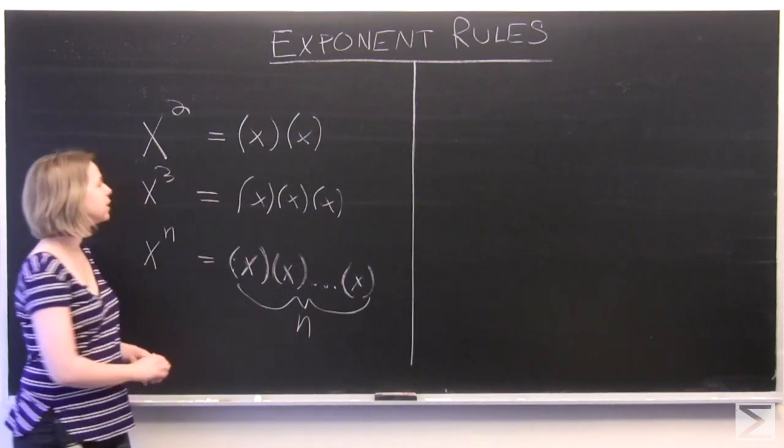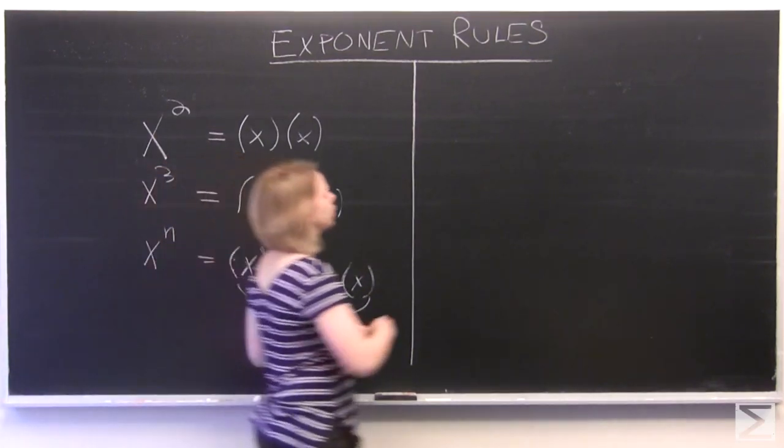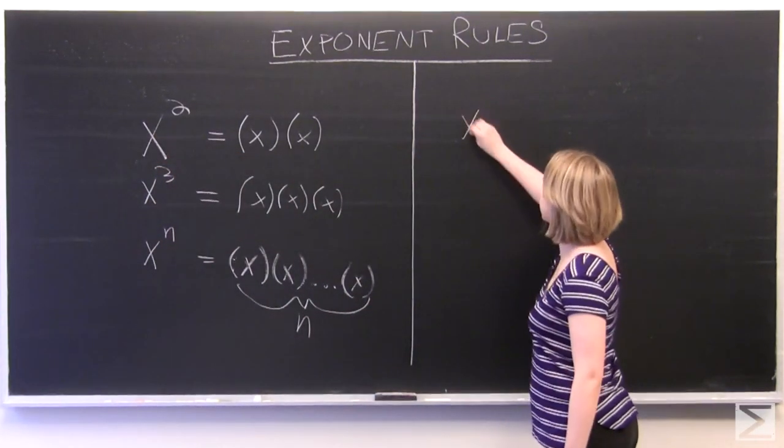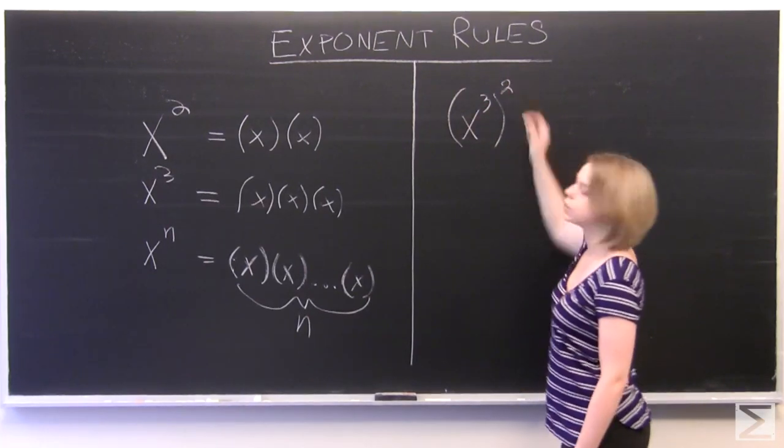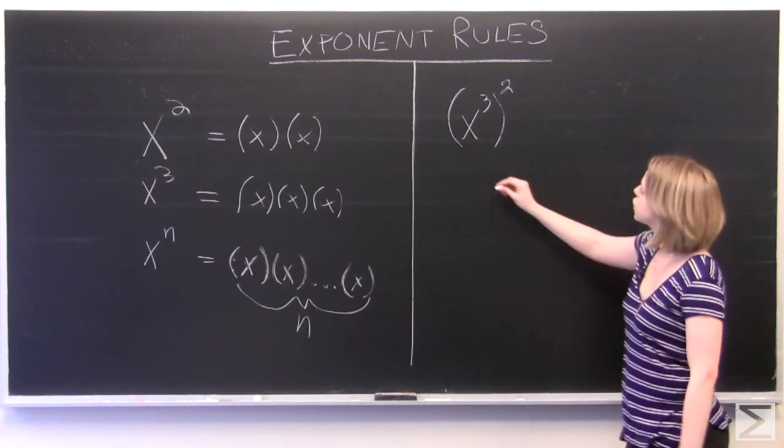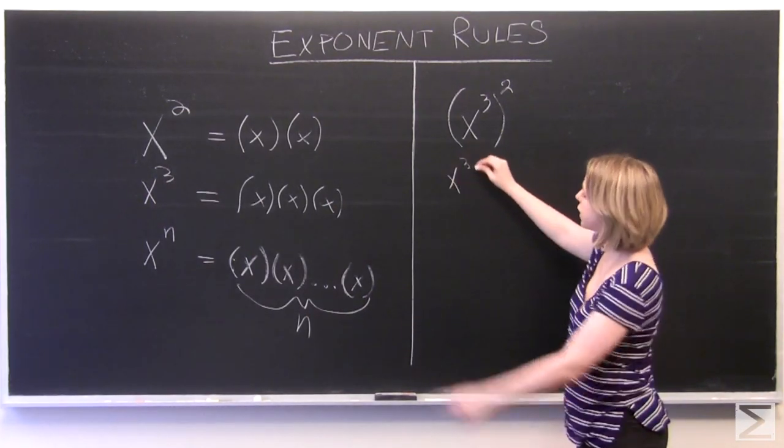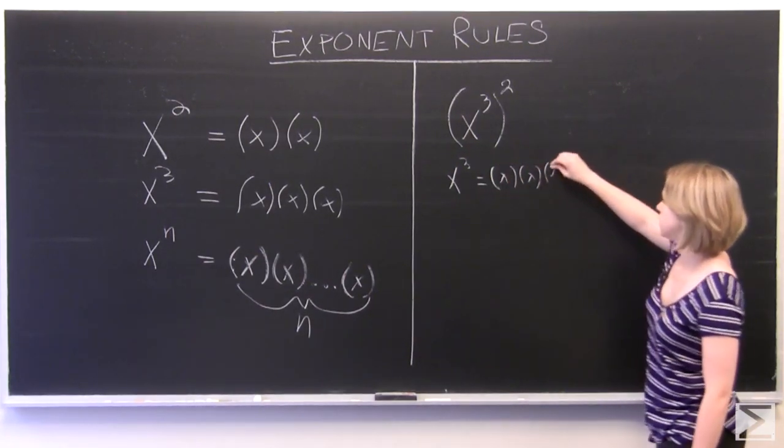And so what if we took an exponent and raised it to another exponent? Let's say we have our quantity x cubed and raised the whole thing to the power of two. Well, let's break it up to see how this works. So we know that x cubed, we define it over here, is equal to x times x times x.